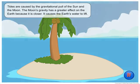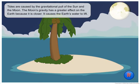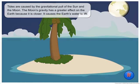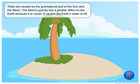The gravitational pull of the Sun and the Moon causes tides. The Moon's gravity has a greater effect on the Earth because it's closer. It causes the Earth's water to lift.